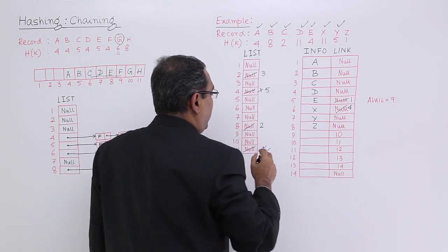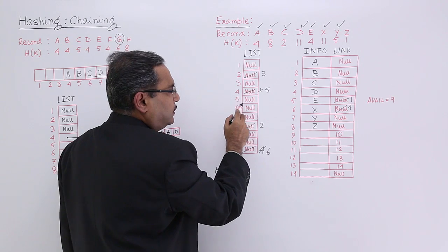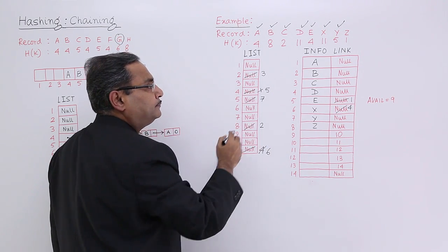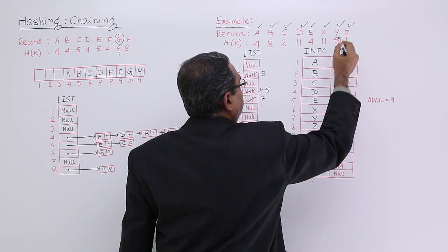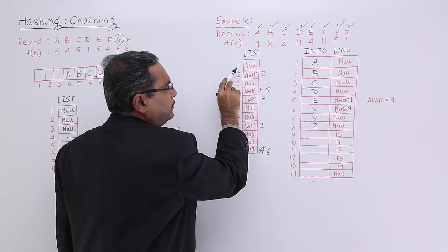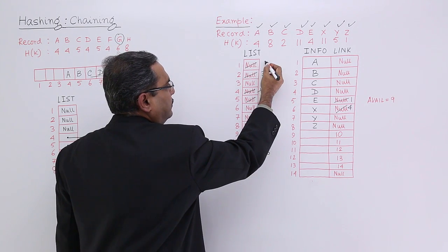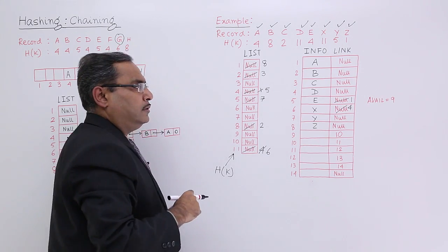Now Y, 5. I am going to the 5th location. The address of Y is 7, so I am making this one 7. Now I am going for Z. Z is location number 1. Z is having address 8.